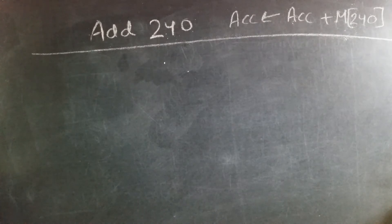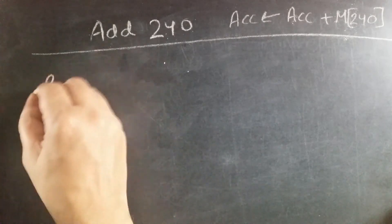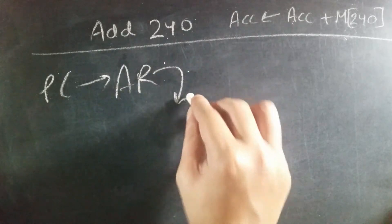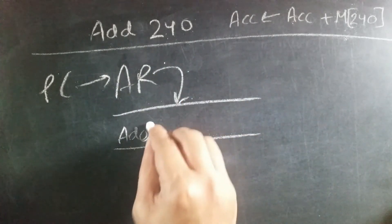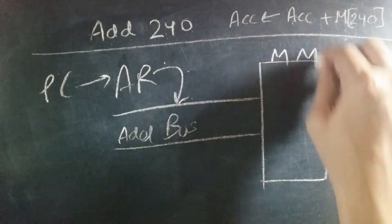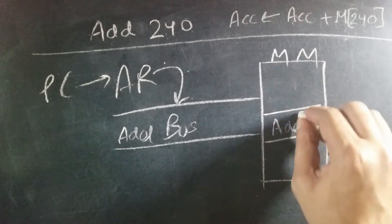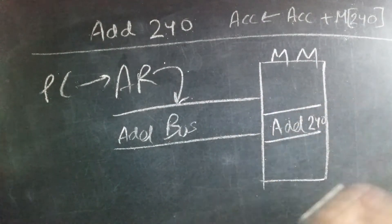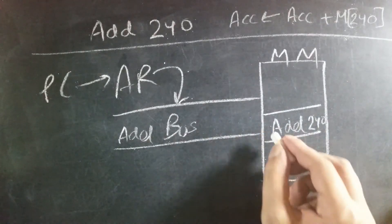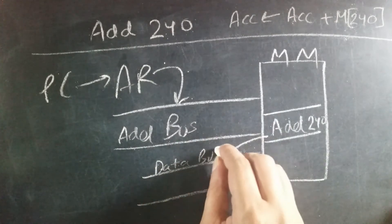Now the program counter will send that location to address register. Since address register handles all the addresses, address register will place that address on the address bus. The address bus will go to main memory and it will see that in the 24th location, ADD 240 is placed.